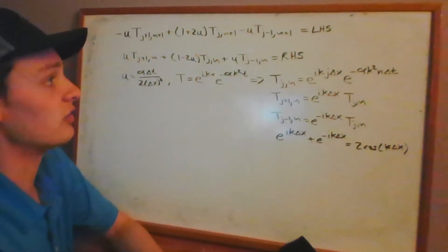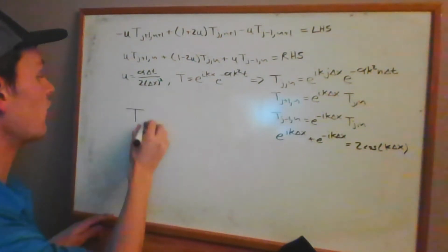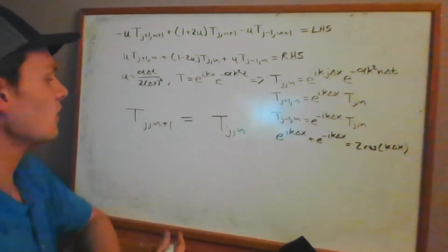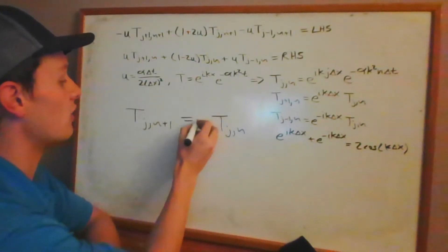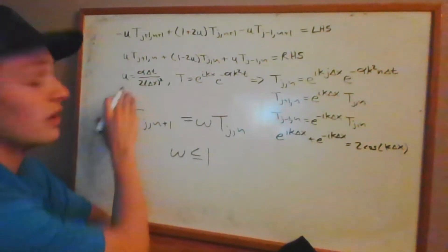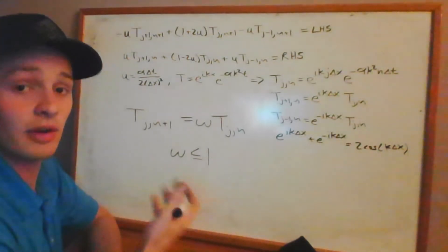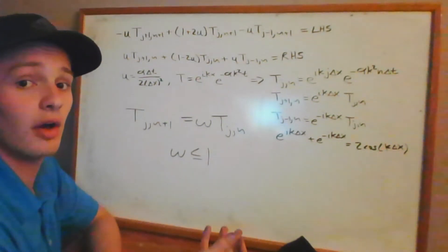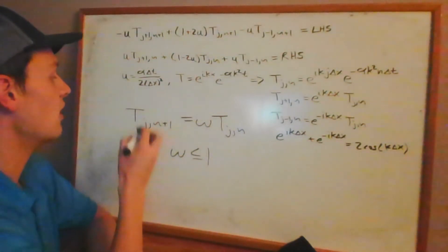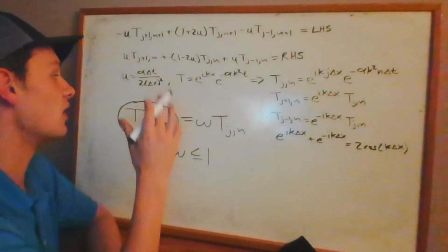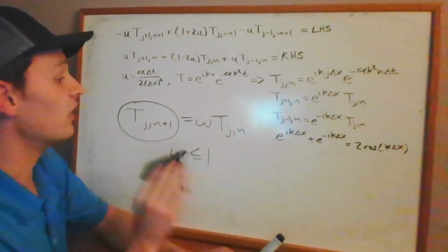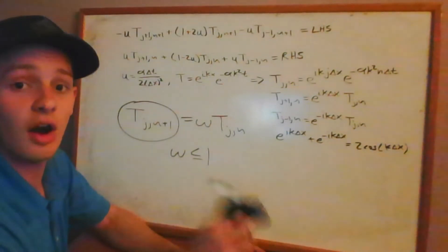In the von Neumann stability analysis that we want to perform, we want to look at a relationship between the temperature at some position j at the subsequent time n+1 and the temperature at the same position j at the previous time n, where these two temperatures are related by some factor, let's say omega. What we want to show is that omega is less than or equal to 1 for any value of u that we choose. That will demonstrate that the Crank-Nicholson method, an implicit differencing method, produces a stable solution — because this factor is always less than or equal to 1, meaning the next temperature at time n+1 doesn't shoot off to positive or negative infinity.